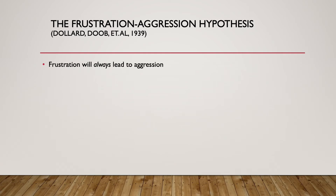First of all, it proposes that frustration will always lead to aggression — so if you become frustrated, you will behave aggressively. Secondly, frustration is the cause of all aggression, so that if you see an aggressive behavior take place, the assumption must be that some sort of frustration has occurred in order to make that happen. By frustration, I'm simply defining that as interference with a goal-directed activity.